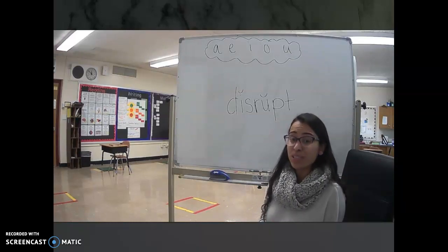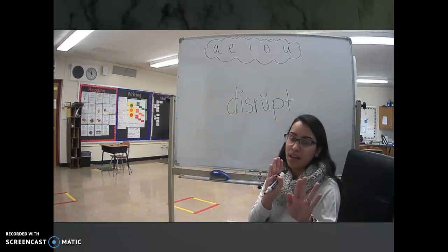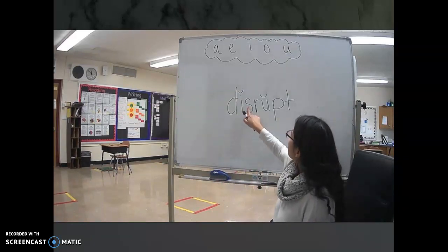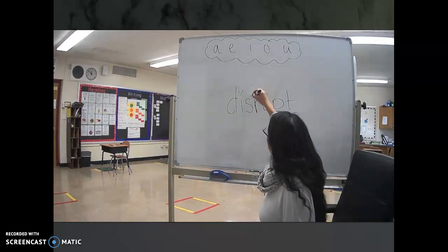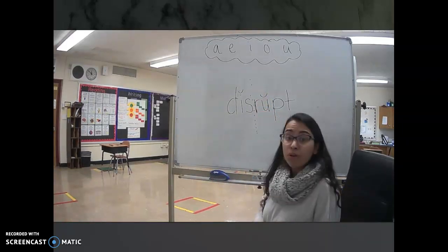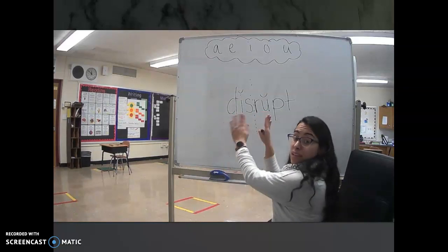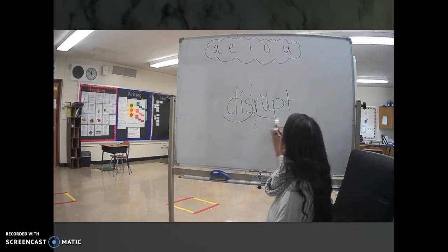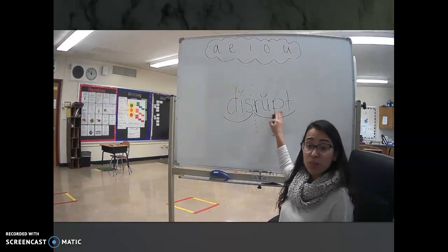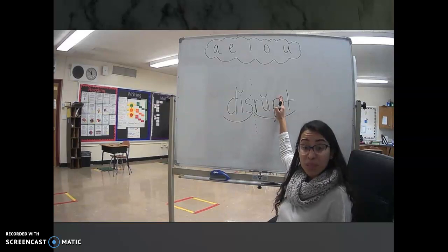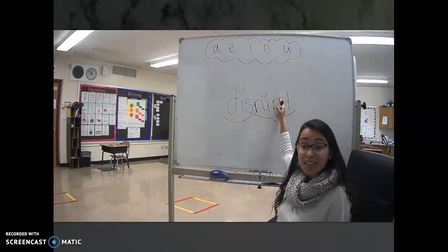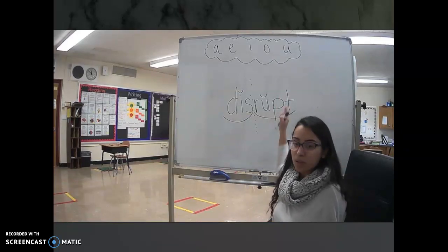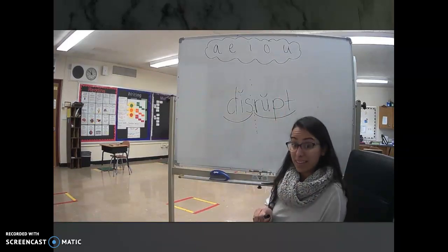The next thing that we want to do is see if there are two consonants side by side. Do we see two consonants side by side? I do. I see S and R. I'm going to draw a little line right here. Those are two consonants side by side. It's really important that we don't split between the P and the T, because if I split here, the T is going to be all by itself. We need to make sure that when we split into two syllables or any syllable that there's always a vowel in it.